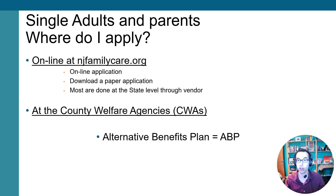To enroll in the MAGI Obamacare Affordable Care Act eligibility group, you go online to njfamilycare.org for the online application. You can also apply at the county welfare agency or the Board of Social Services in your county. The benefit for this eligibility group is called the Alternative Benefits Plan, which is identical in every way to Medicaid Plan A — meaning you get Medicaid.